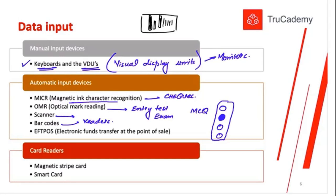EFTPOS — Electronic Funds Transfer at the Point of Sale. You've likely seen a device at a shop counter where they swipe your debit or credit card; that machine is called EFTPOS. At the time of sale, it transfers funds from one bank account to another. There are also specialized card readers. Magnetic stripe cards have a black strip on the back of your debit card containing all card information. When you put it into an ATM, that strip is read to retrieve all the information.